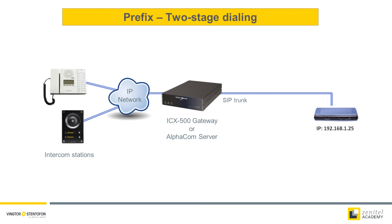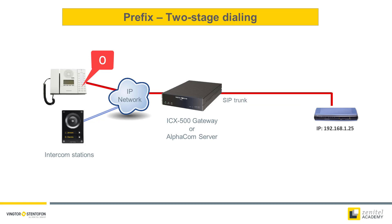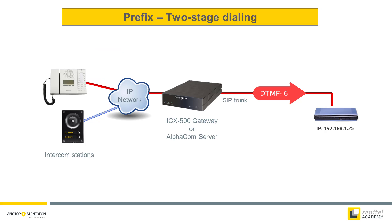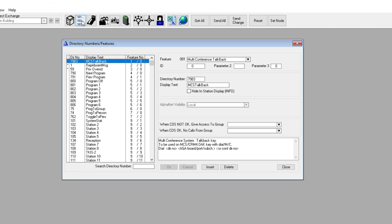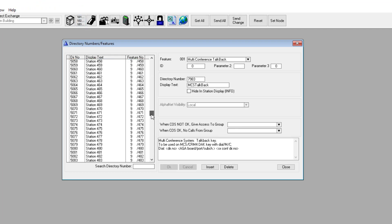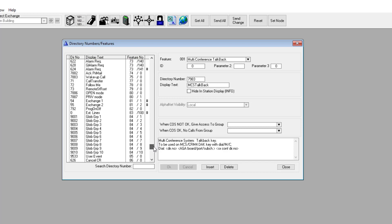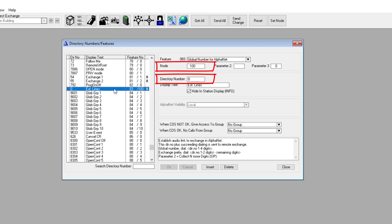When using two-stage dialing, a connection to the gateway is established as soon as the prefix is dialed. Successive digits are sent one by one from the ICX AlphaCom to the gateway as SIP DTMF signals. The SIP gateway will then forward each received digit out on the phone line. The prefix for two-stage dialing is included by default. In the directory list, scroll down to feature 83, where you will find that directory number 0 is a prefix to SIP node 100. The directory number or the node number can be changed if required.